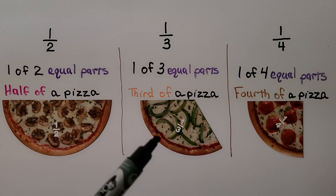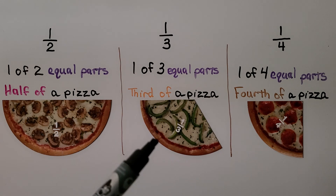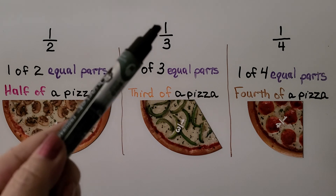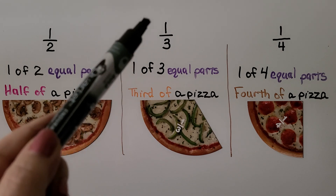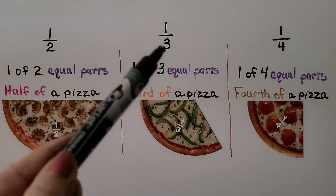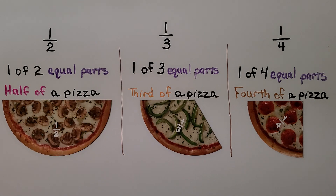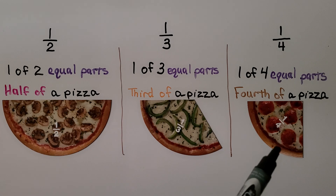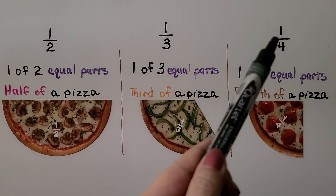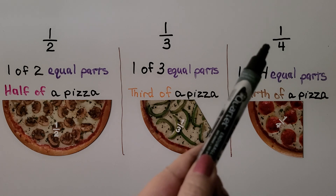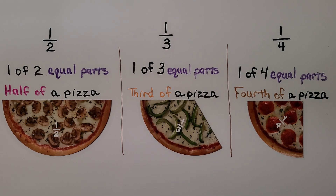Here's a third of a pizza. It's one of three equal parts. We write it with a one, then the bar, and a three. Here's a fourth of a pizza — it's one of four equal parts. We write it with a one, then a four underneath the bar.